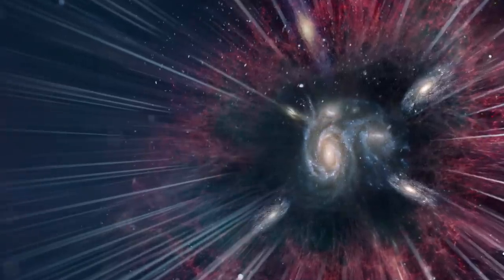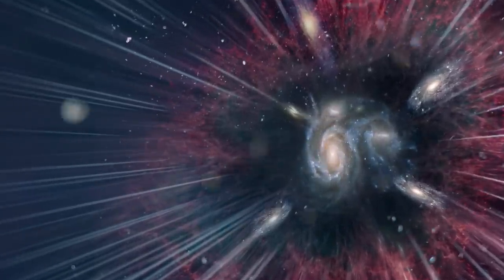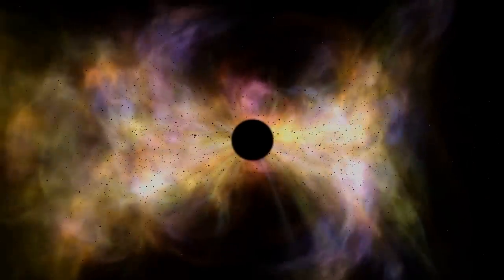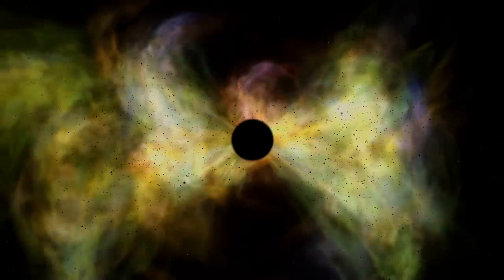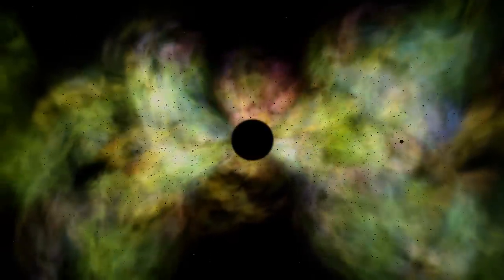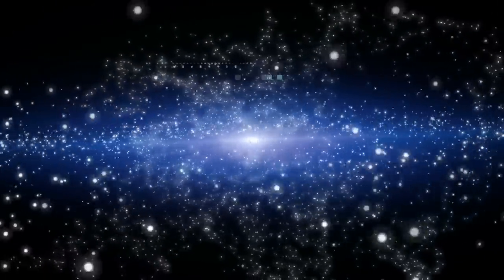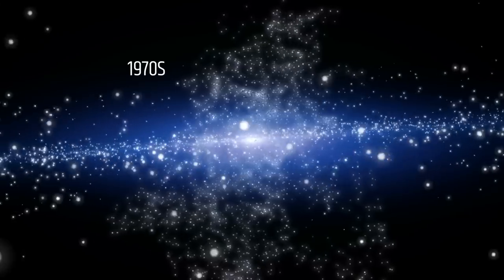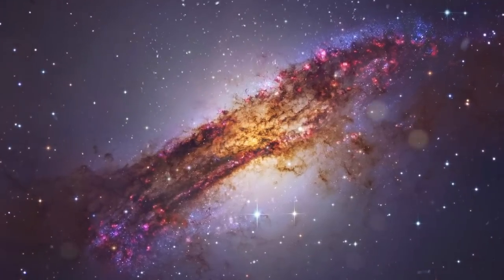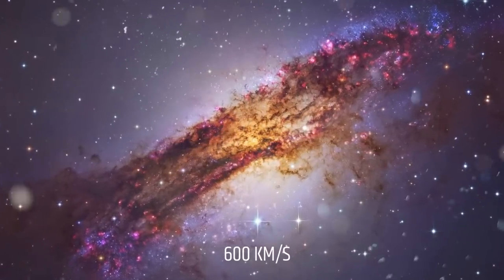The Great Attractor is an example of a gravitational anomaly in space, and it appears to be a region of dark matter that is exerting a powerful gravitational force on the galaxies around it. The Milky Way was first discovered in the 1970s, moving in the direction of Centaurus at 600 kilometers per second.